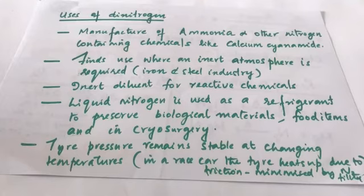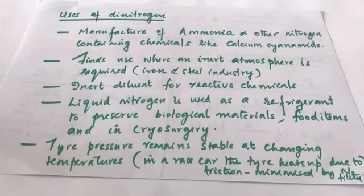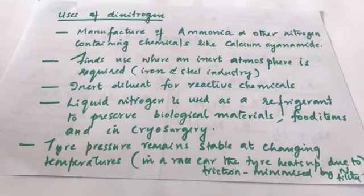Liquid nitrogen is used as a refrigerant to preserve biological materials and food items, and in cryosurgery. In food packaging, like chip bags, nitrogen is used to prevent oxidation of fats and oils. In tires, dinitrogen is used instead of air so that tire pressure remains stable at changing temperatures.